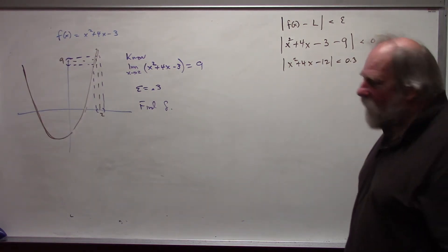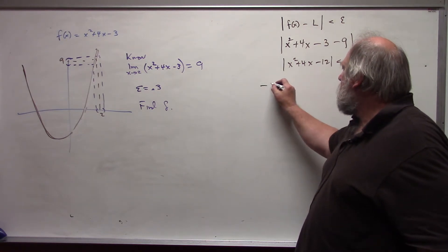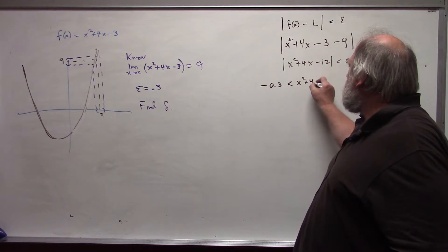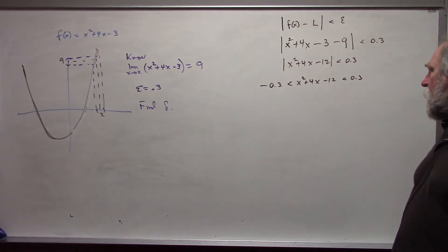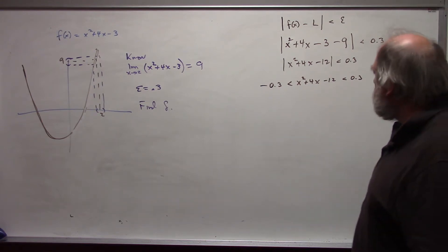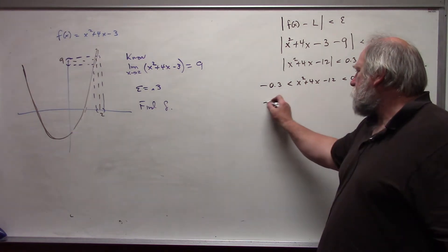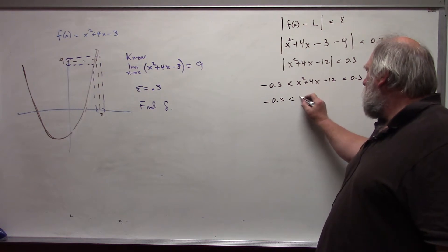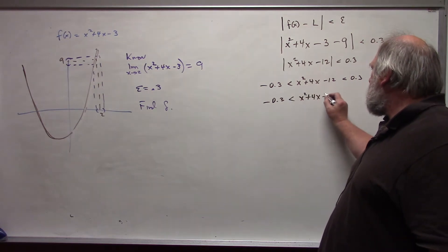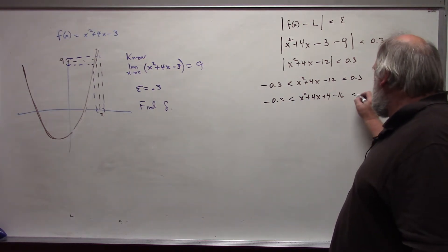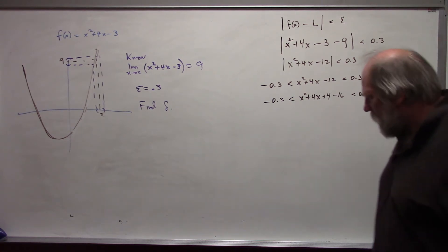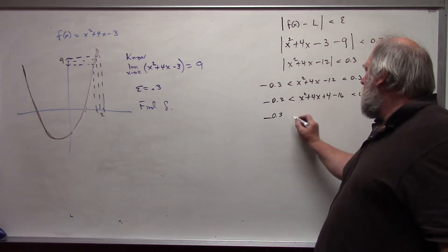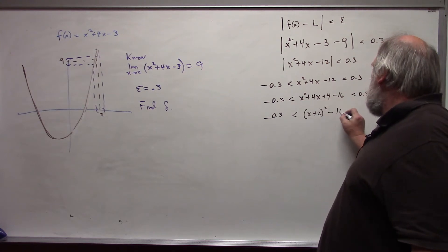Using algebra, we can write this saying negative 0.3 is less than x squared plus 4x minus 12 is less than 0.3. And now I have to somehow get x minus 2 in the middle. The first thing I want to do is complete the square. I have to get rid of this quadratic. And so this becomes x squared plus 4x plus 4 minus 16. I added and subtracted 4. Remember how to complete the square? Probably not, but that's why we're looking at this. So this is x plus 2 quantity squared minus 16.